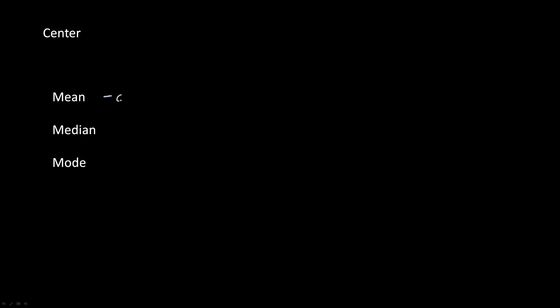The first way is going to be the center. There are three ways to describe the center. The first is going to be the mean — the average of a data set — adding up all the numerical values and dividing by the total amount of values. Or you can use the median, which is the center of the data set, and the mode, which is whatever value occurs the most in the data set.